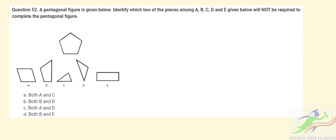Question 52: A pentagonal figure is given below. Identify which of the two pieces among A, B, C, D, E given below will not be required to complete the pentagonal figure. So out of A, B, C, D, E, let's try to redraw the figure using the following components.